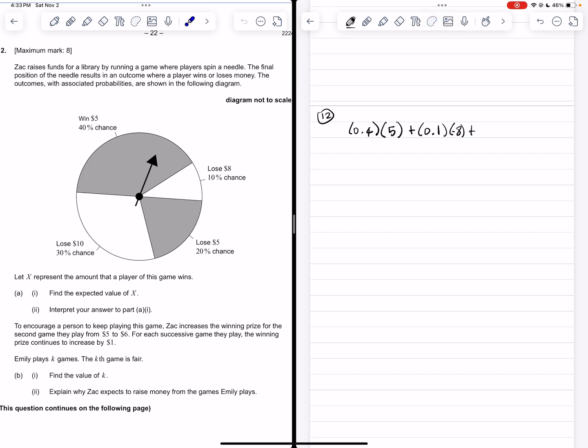And then we keep going, 0.2, that's the 20% there, times 5. And finally, 30%, so 0.3, times 10. Oh, and all of these are negative. So negative 5 and negative 10. Let me make some room, move this over. So once we put that all into the calculator, we get $2.80, but that's negative $2.80, and that is our expected value.